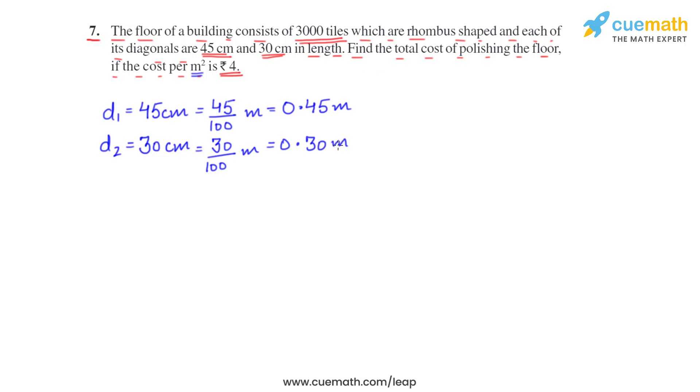Now we have to find the area of one tile first, then we will multiply it by 3000 to get the area of 3000 tiles, which is nothing but the area of the floor. Then we will multiply it by the rate, that is rupees 4, to find the total cost.